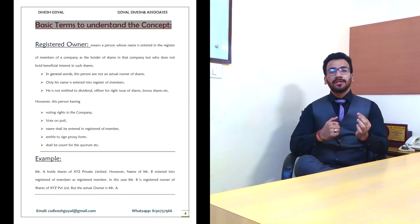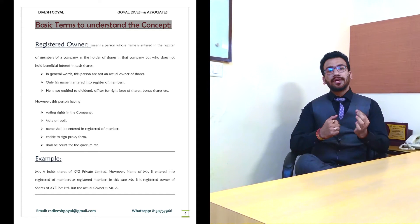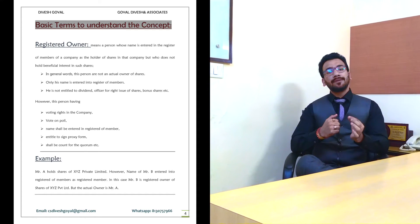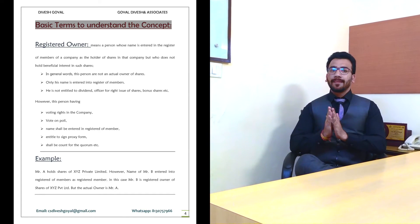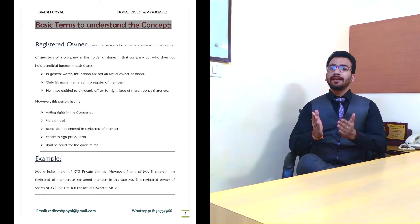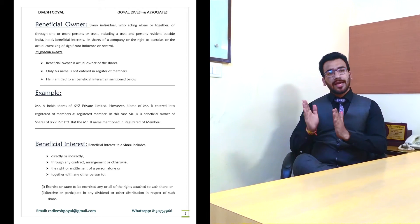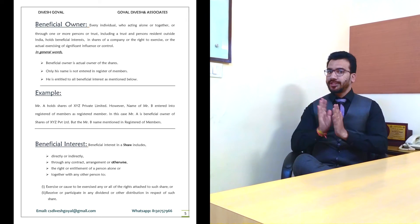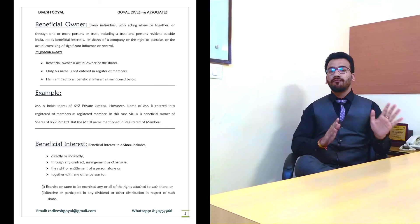First, Registered Owner. A Registered Owner is a person who may or may not be the actual owner of the share, but whose name shall be entered into the Register of Members as a Member — in simple words. Second, Beneficial Owner. A Beneficial Owner is the actual owner of the share, but their name is nowhere mentioned in the Register of Members.